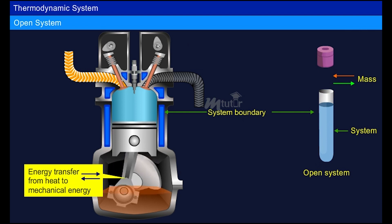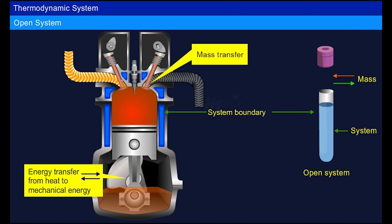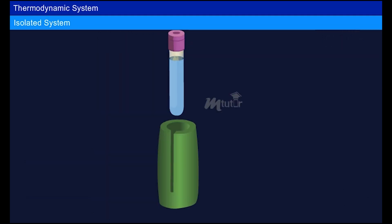In an open system, after compression and expansion processes, the exhaust valve opens and both mass and energy transfer take place. Since both mass and energy transfer occur, it is also called a control volume process. Thus, the exhaust stroke of an IC engine can be called an open system.